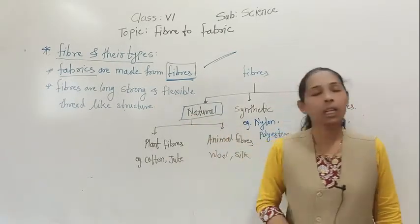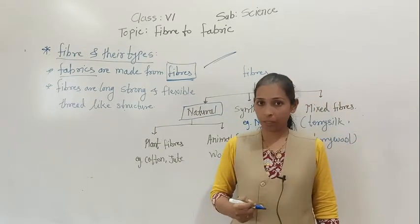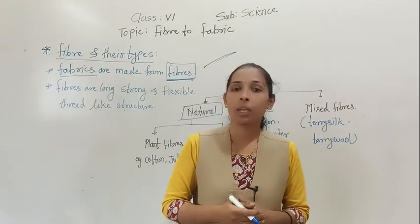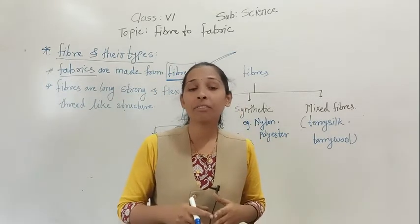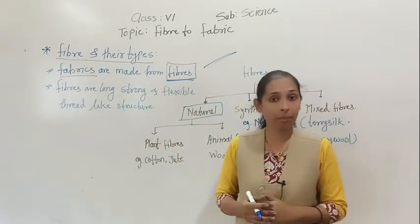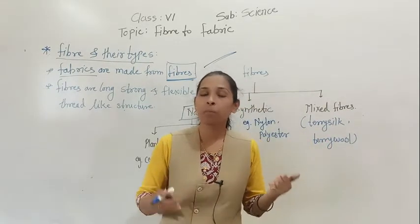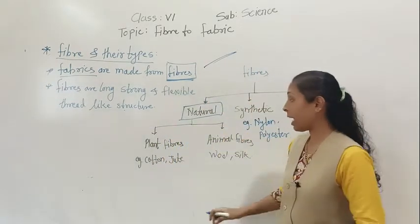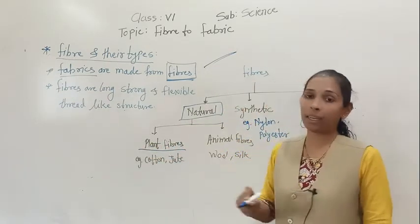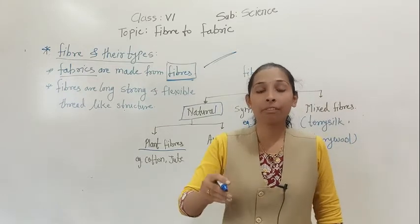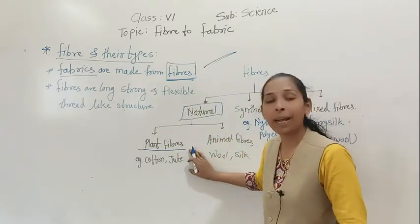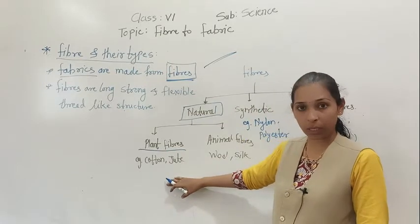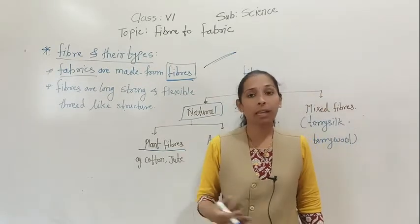Natural fibers are the fibers we get from plants or animals. Examples of natural fibers include cotton, jute, flax, coir, and hemp. The fibers obtained from plants are called plant fibers — examples are cotton, jute, and coir, which we get from coconut.